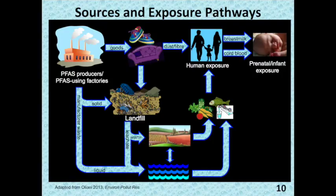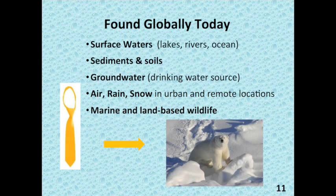We know much less about the other family members and cousins of PFOS and PFOA. However, we do know from recent work that cord blood disproportionately transfers the shorter chain forms of some fluorochemicals from mother to fetus.